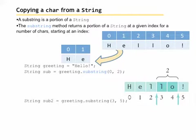So we can copy a character from a string. We can get one character out of a string, and this is called a substring. We can use the substring method to get specific characters. So let's say we want to pull out the first two characters from the string hello with an exclamation point.